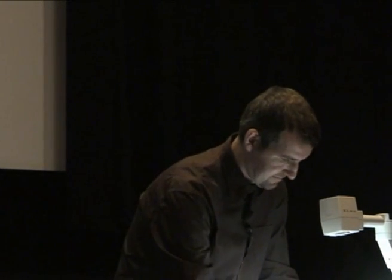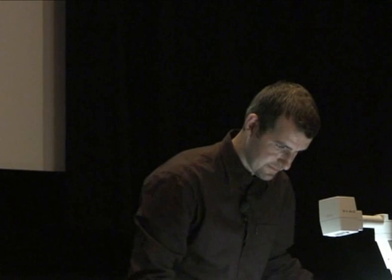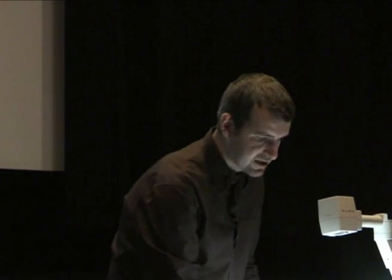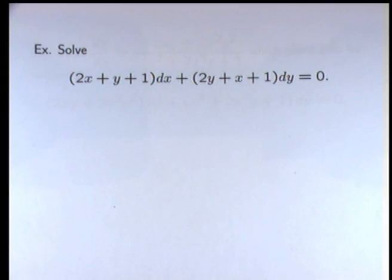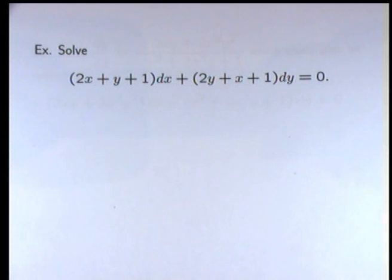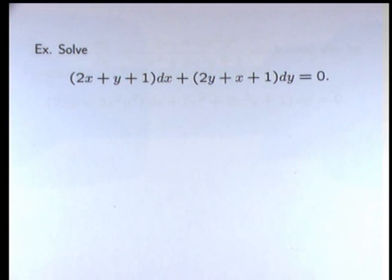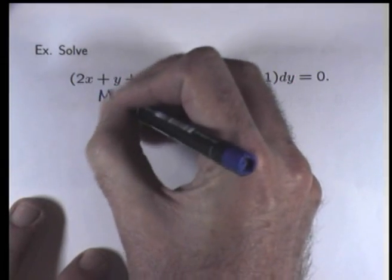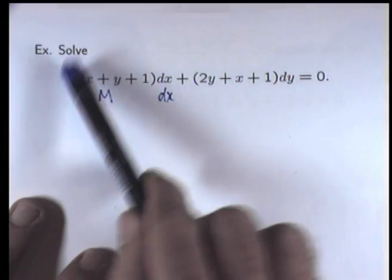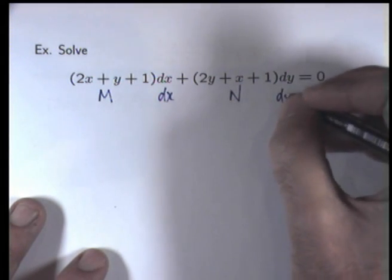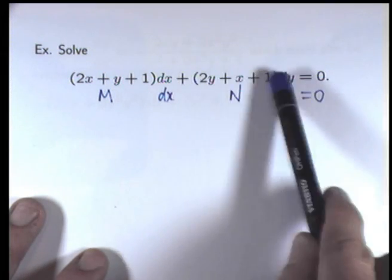Okay, so let's do a problem and see how it all works. Solve the following ordinary differential equation. Now, the first thing you probably notice is that the dy dx is split up into a so-called differential form. And this form is quite common, a common way of writing exact equations. So, here, m would be this first function and n would be this second function.